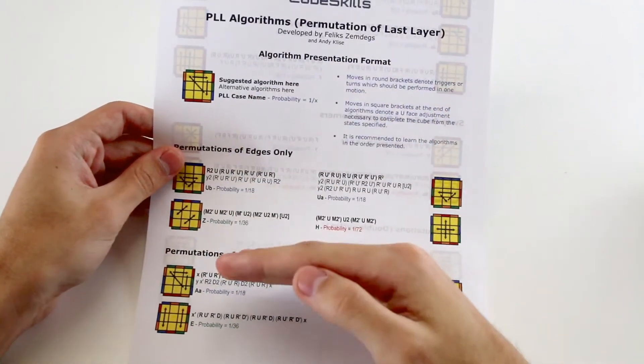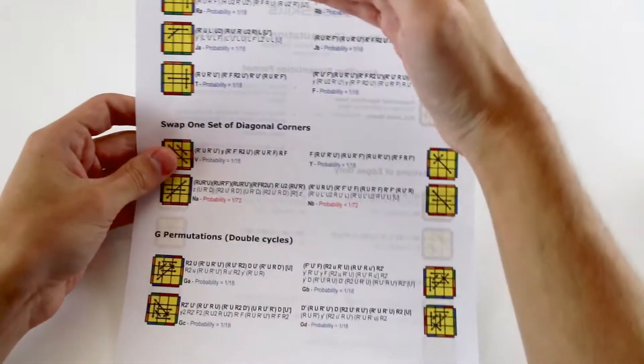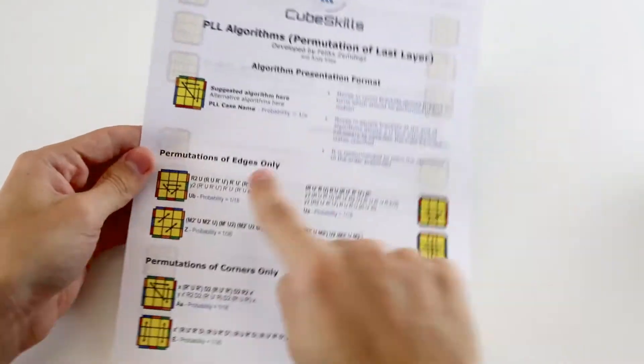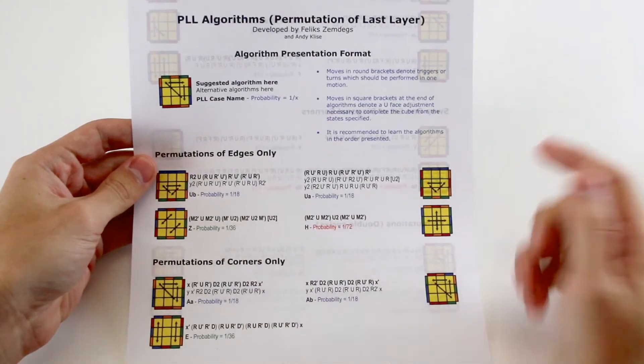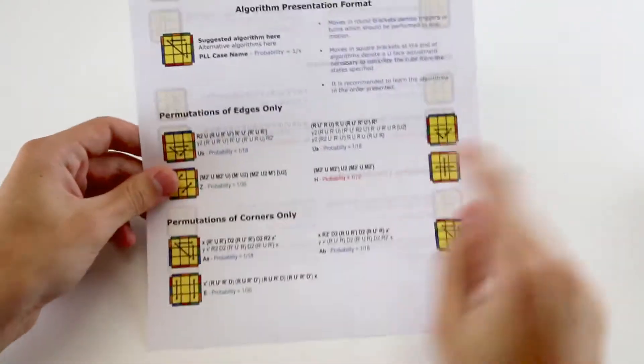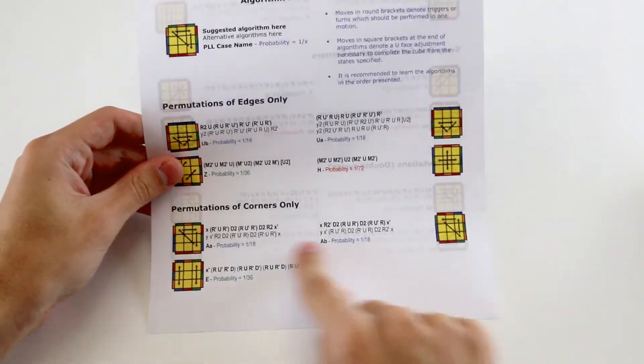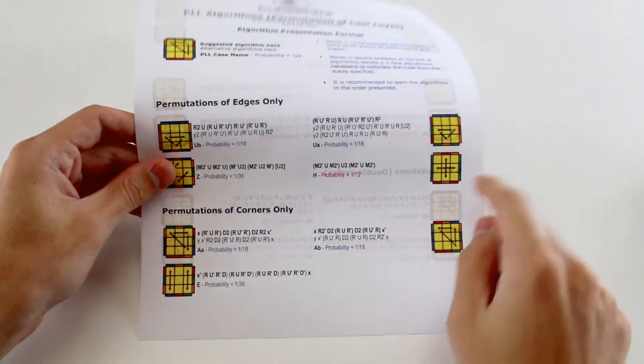The order in which the algorithms appear is the order we suggest learning them, and we've broken them up into five distinct groups. The first group is the edge-only PLLs, where you only need to solve the edges. The second group are the corner-only PLLs, where you only need to swap the corners.